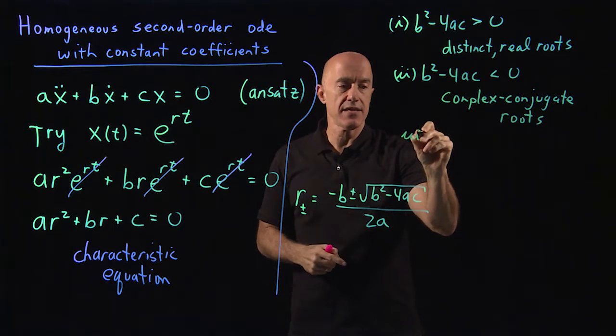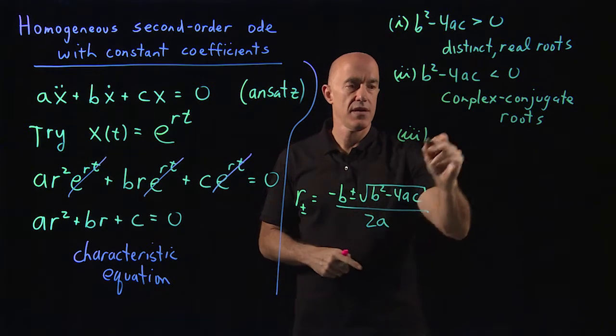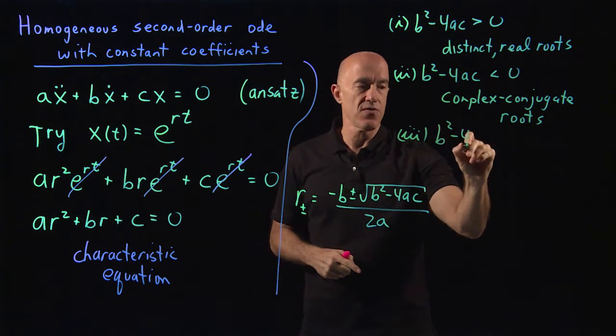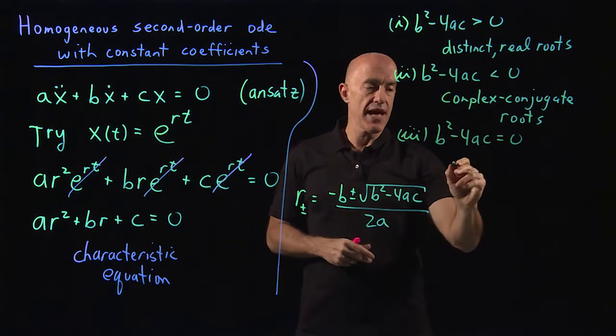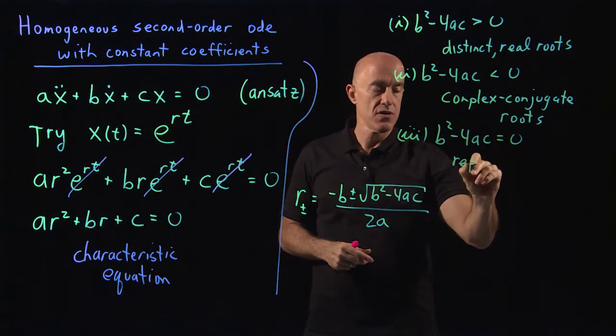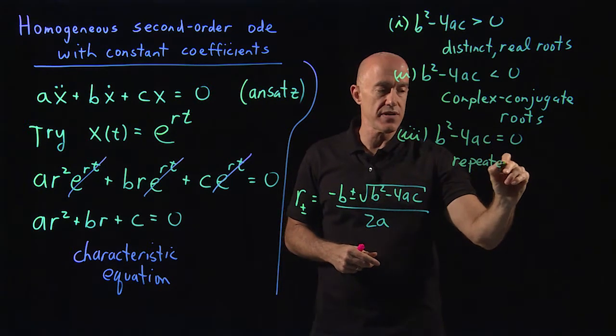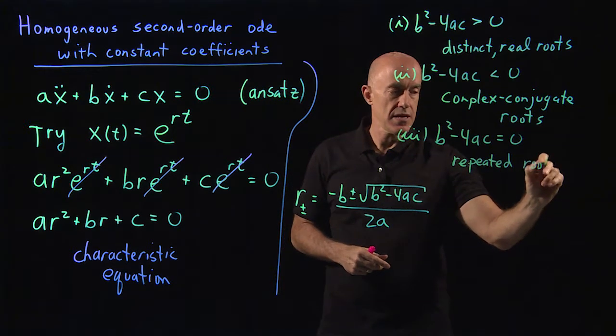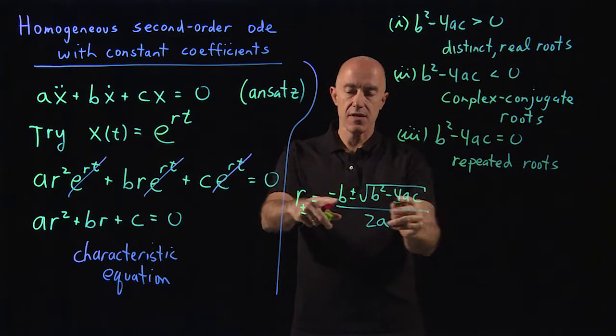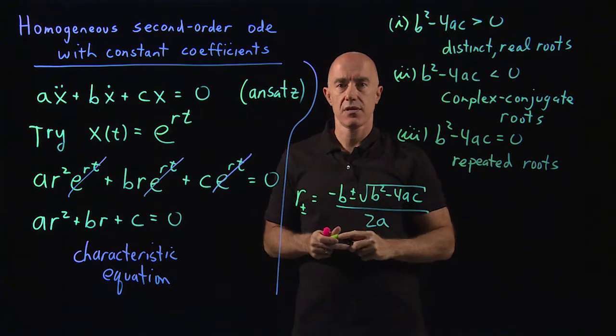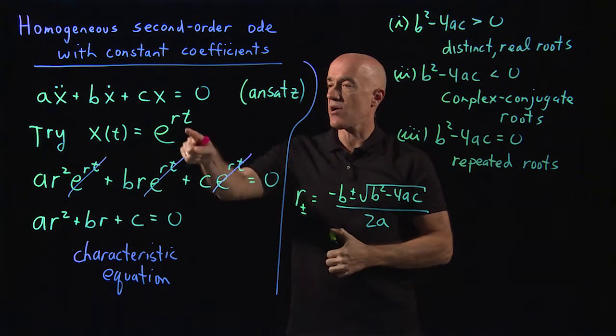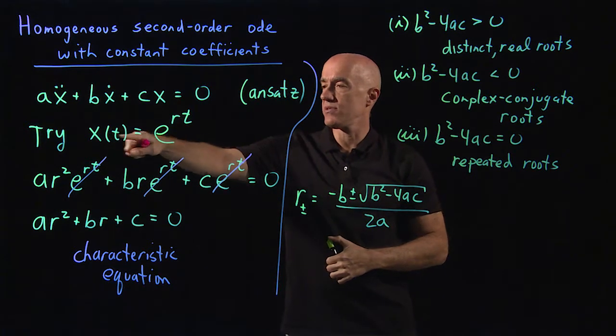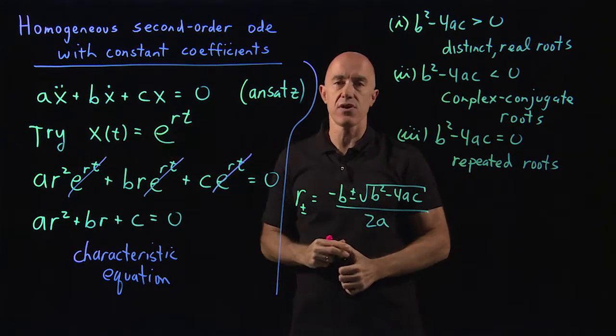And then the last case that we'll have to deal with is b squared minus 4ac equals 0. Then we have repeated roots, or sometimes called degenerate roots. In this case, there's only one root of the characteristic equation. We find only one r, we have only one solution, x equals e to the rt.